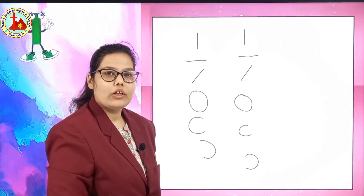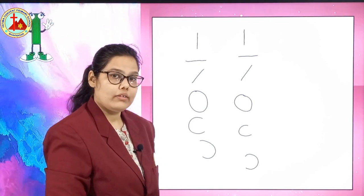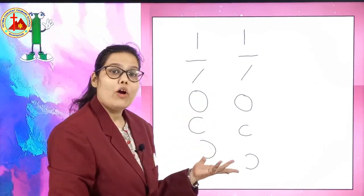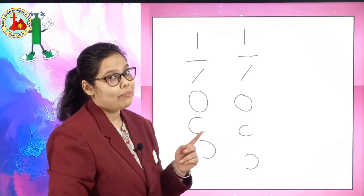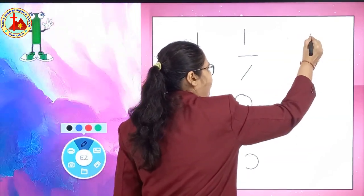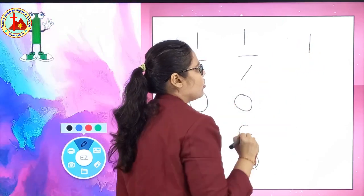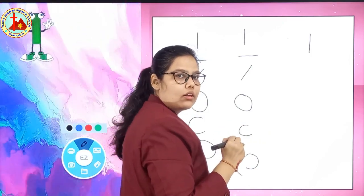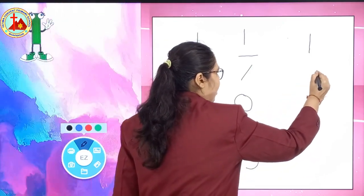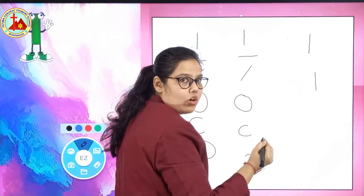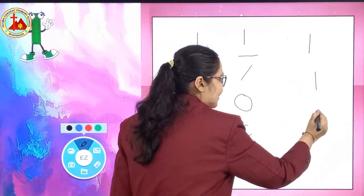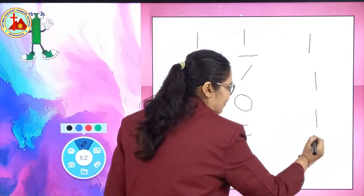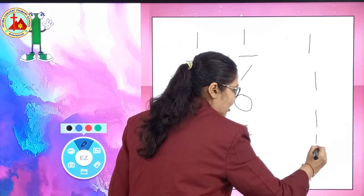Now we are going to learn how to write number 1. So now children, you have seen lines and curves. With the help of lines and curves, now we will write number 1. From upward to downward, you have to write, it is also called a standing line. And 1. See one more time. Upward to downward, 1. What is this? 1. Children, you have to write and say upward to downward 1. One more time I will show you, upward to downward 1.